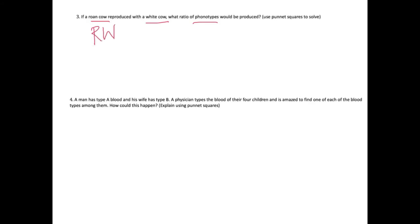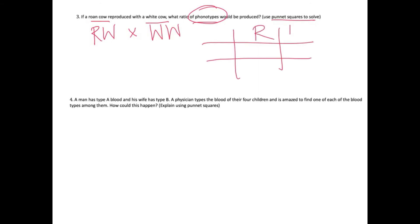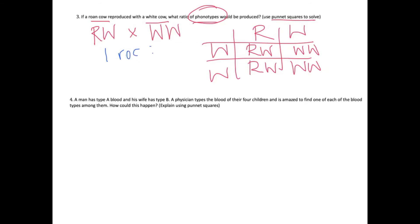Question three: if a roan cow — that's our red and white cow — reproduced with a white cow, what ratio of phenotypes would be produced? Our roan cow is heterozygous RW, crossed with a homozygous white WW. Drawing up our Punnett square with RW × WW, we get: RW, WW, RW, WW. So the ratio of phenotypes is one roan to one white.